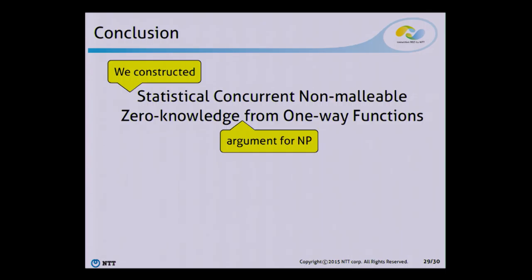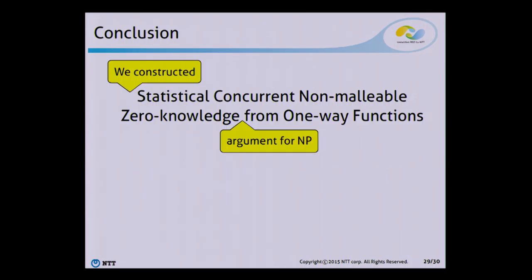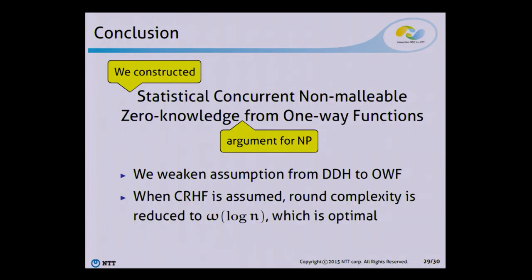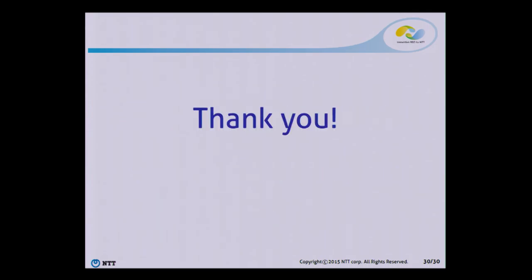In conclusion, I constructed a statistical concurrent non-malleable zero-knowledge argument for NP from one-way functions, which weakens the assumption needed from the DDH assumption to one-way functions. Although I did not discuss it in this talk, the round complexity can also be reduced to logarithmic if we assume a collision-resistant hash function. Thank you for listening.